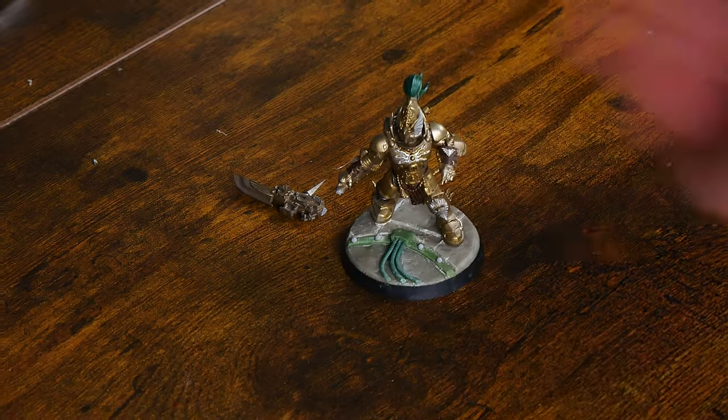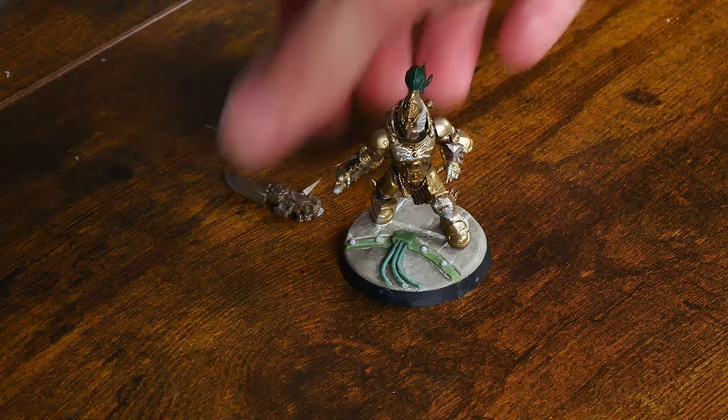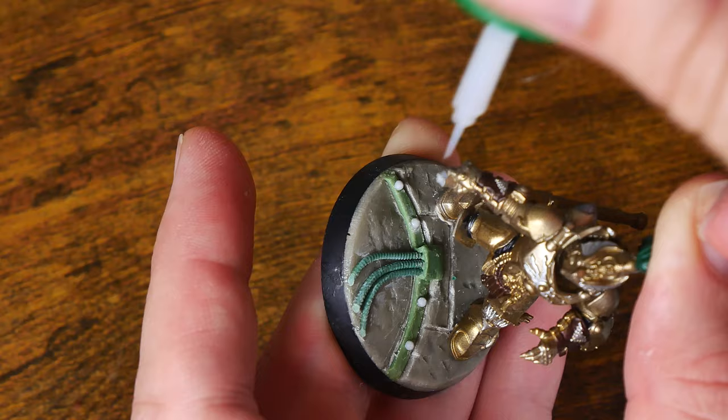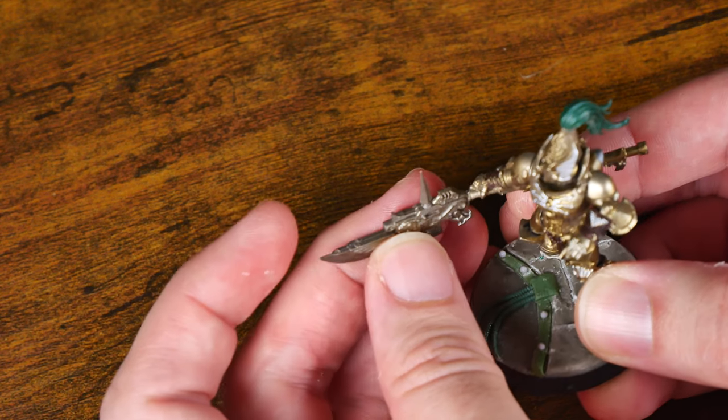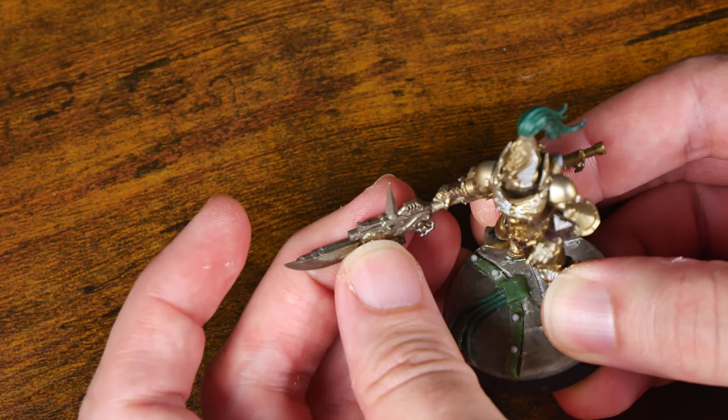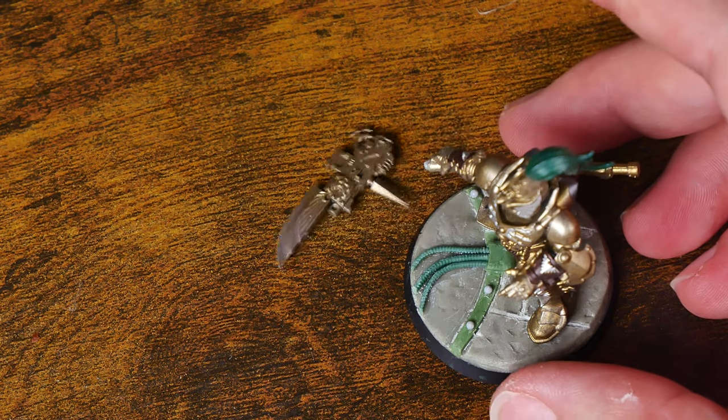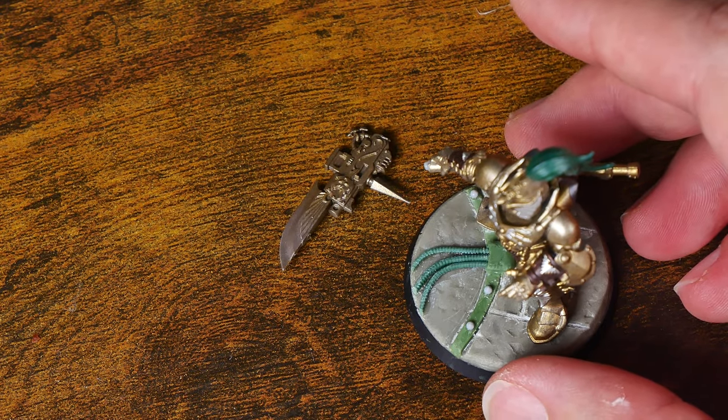It's almost a guarantee that eventually a Warhammer model's weapon will break off in your collection. When this happens, you could just try to glue it back on, but once the resin or plastic is broken, the bond is going to be far weaker, and it's quite possible that it will break off again in the near future.